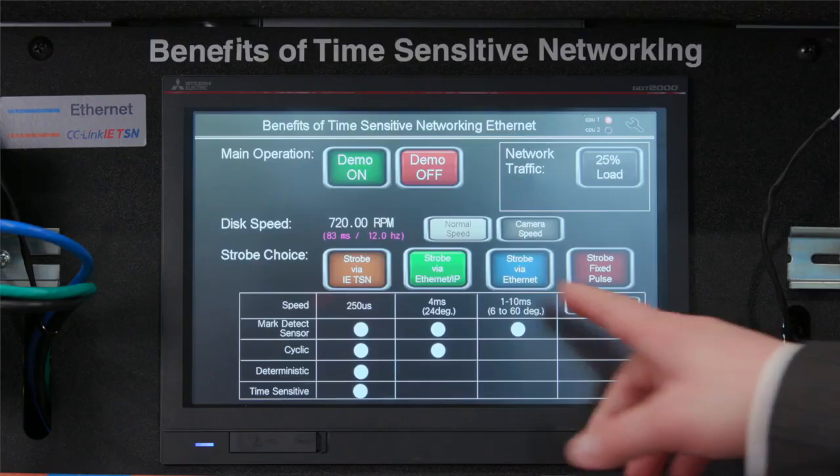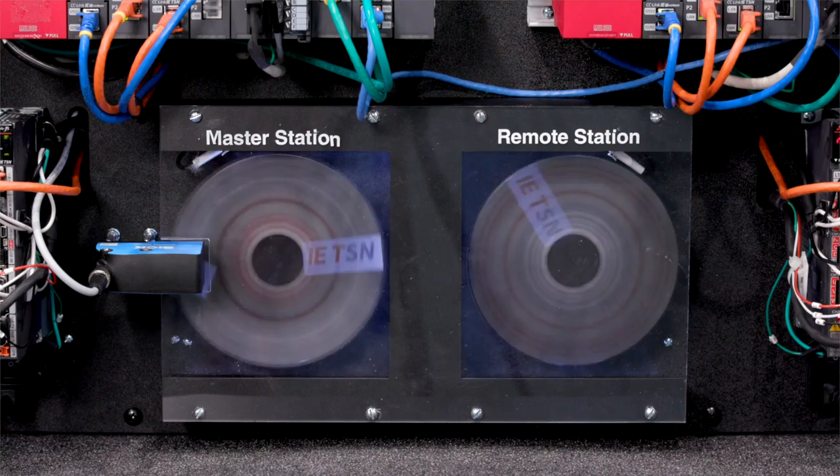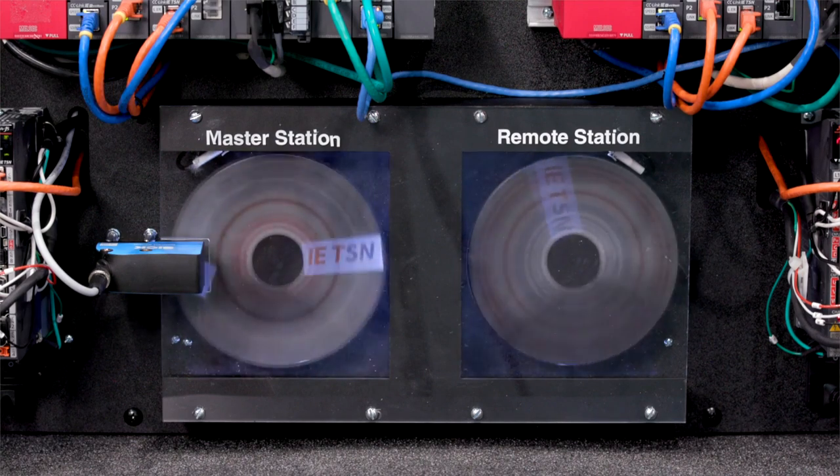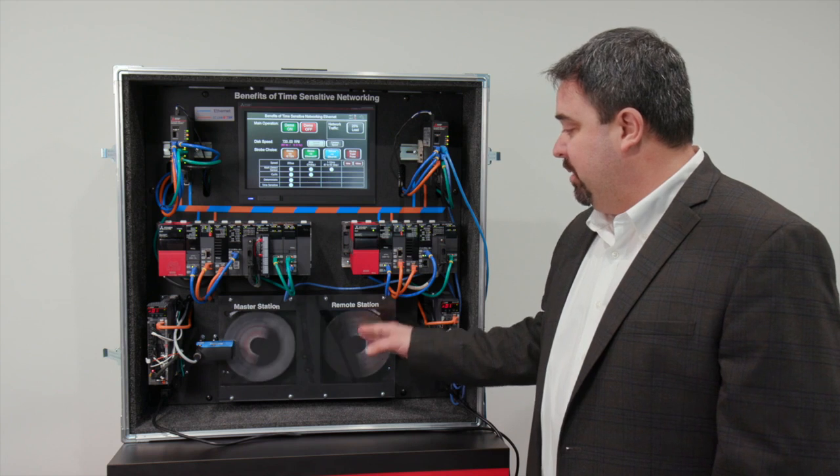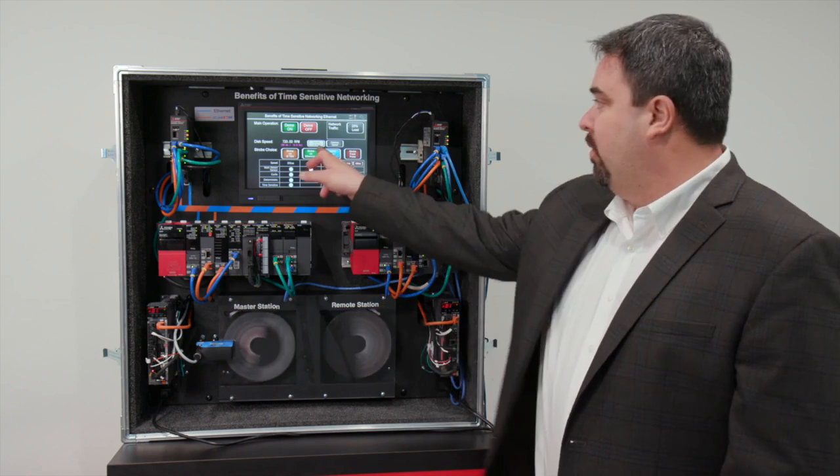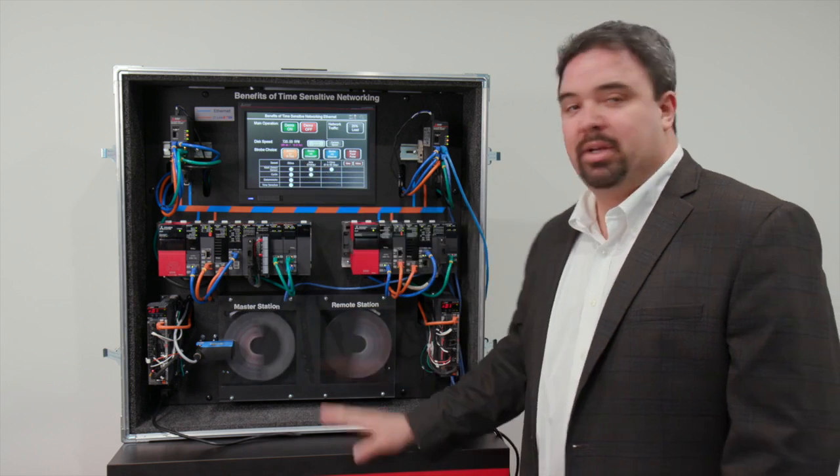We could also send the strobe signal with Ethernet. Now with Ethernet, it's even more delayed. That's just general Ethernet. When we send a packet out, we don't know when it's going to arrive. That's the difference between just Ethernet or a cyclic Ethernet network or a deterministic network.